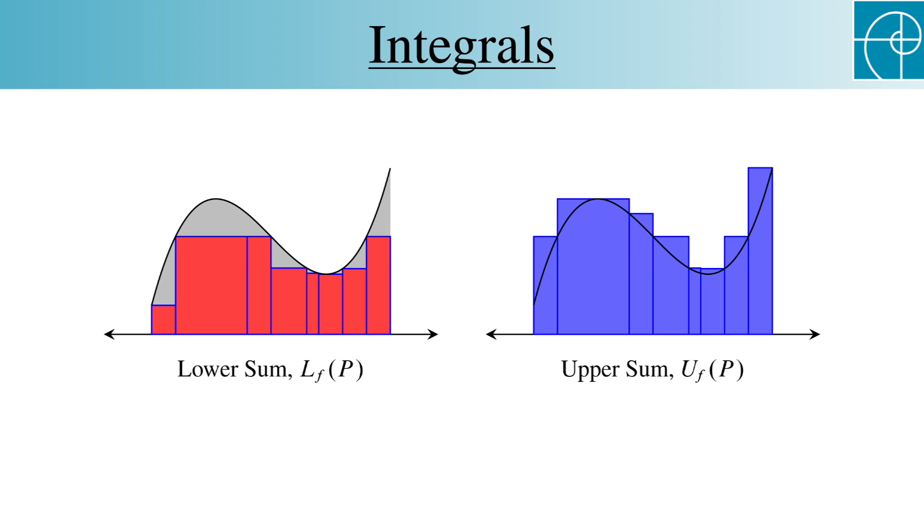Let's look again at these graphs. Notice that for any partition p, the lower sum is always bounded above by the upper sum. Not only that, but the gray area that we're trying to find is always between these two, regardless of what partition we choose.